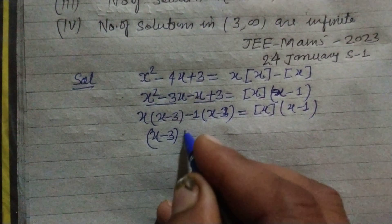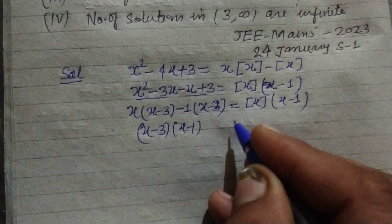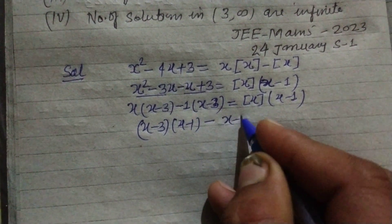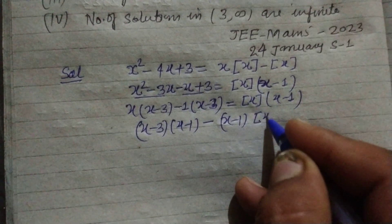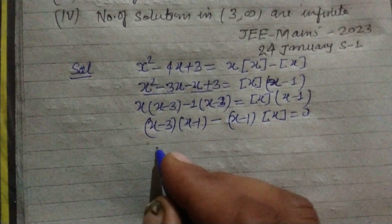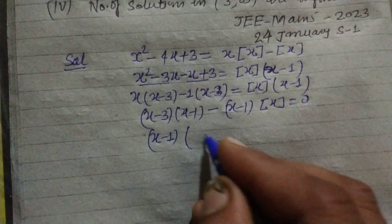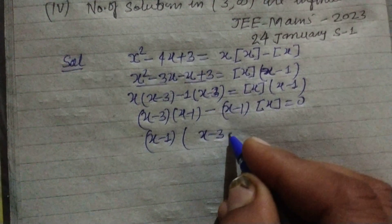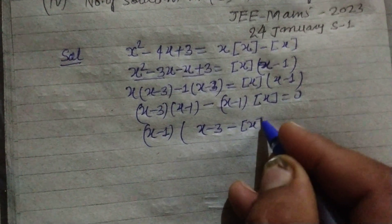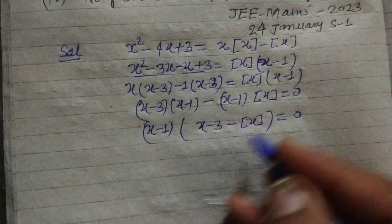So (x - 3)(x - 1), we bring this to this side, so (x - 1) - [x](x - 1) = 0. Here (x - 1) is common in both. So (x - 3 - [x]) = 0.